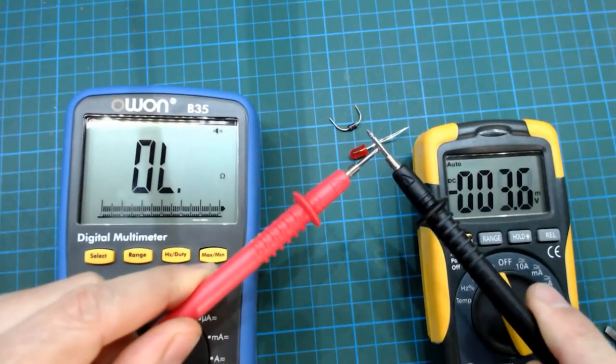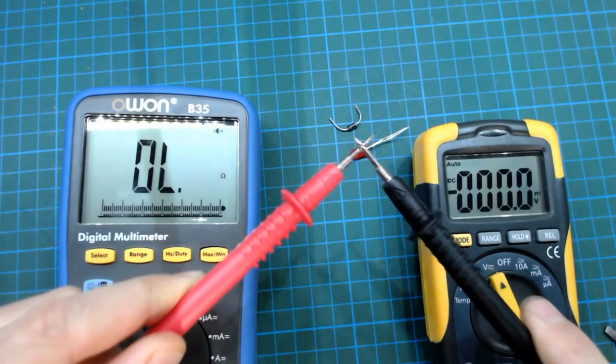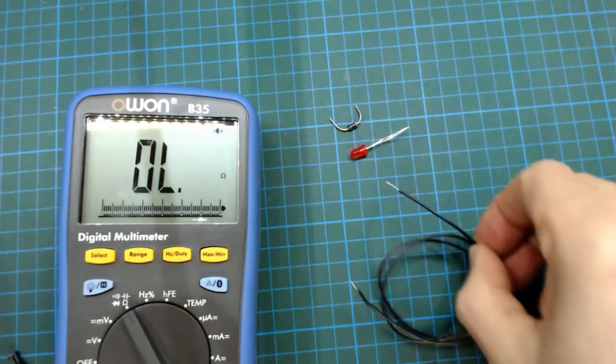Before you start your continuity test you should also check that the multimeter is doing its thing by tapping the two ends of the probes together. You should hear it tone.